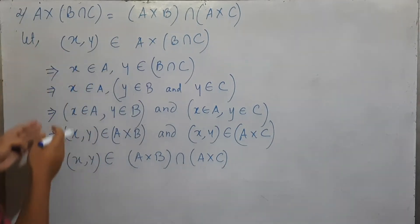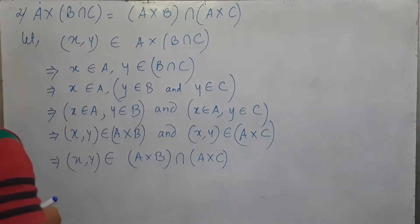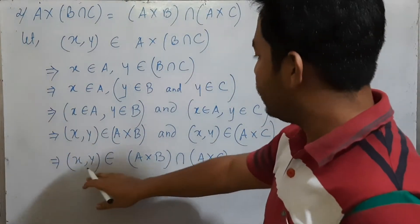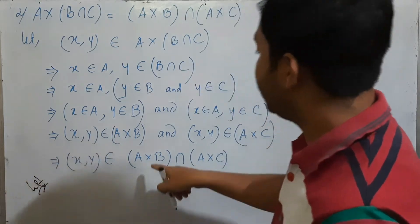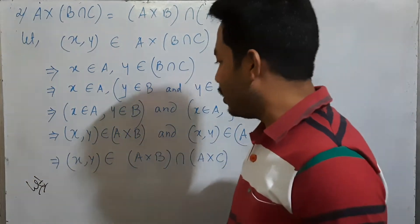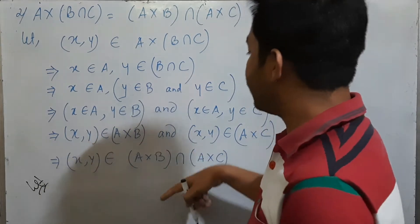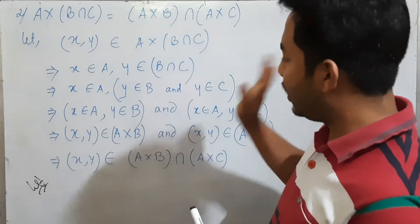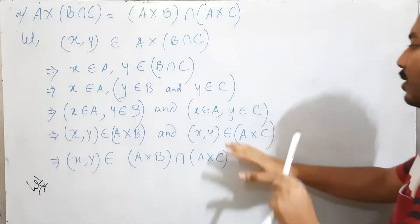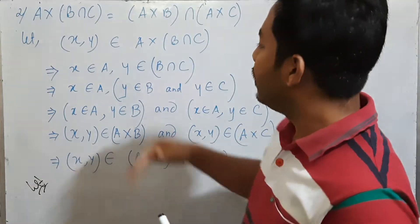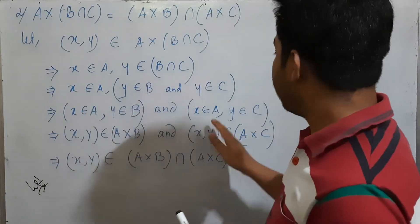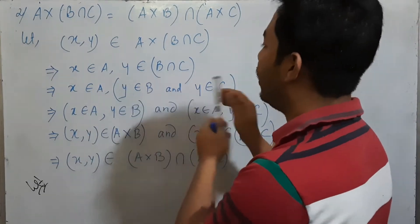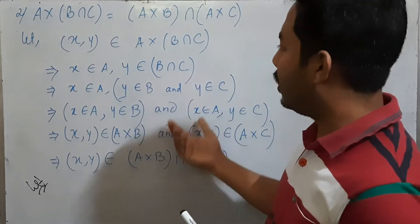So X, Y belongs to A cross C. This is the intersection. We will read the second one — the arrangement is such that we can derive: X belongs to A, and the second and third conditions follow.